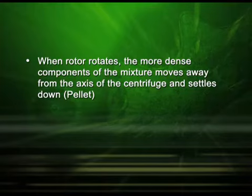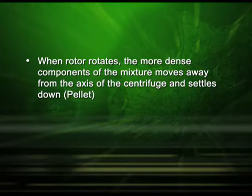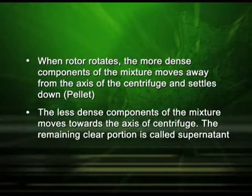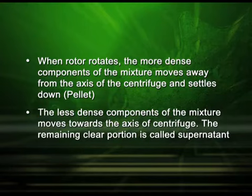The centrifuge has a rotor which rotates, and inside the rotor is the space for the centrifuge tube containing the sample. When the rotor rotates, the more dense components of the cellular mixture settle down because they tend to move away from the axis of the centrifuge. The less dense components move towards the axis and remain as the supernatant. The denser components which settle down are called the pellet.